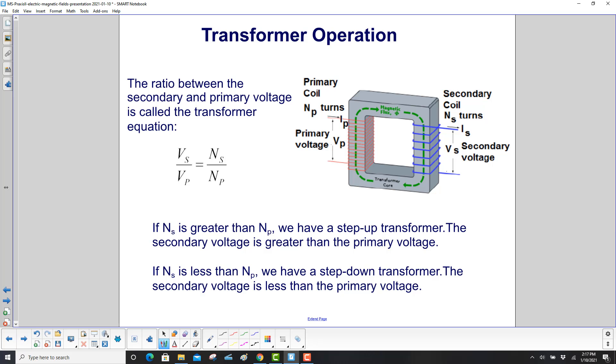The ratio between the secondary and the primary voltage is called the transformer equation. You have the voltage in the secondary, voltage in the primary, number of coils in the secondary, number of coils in the primary.